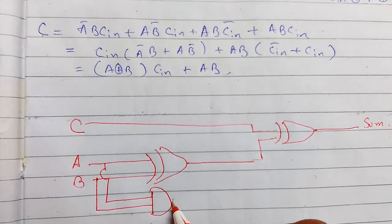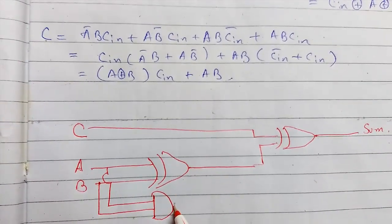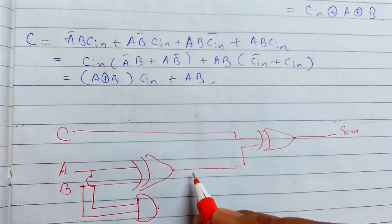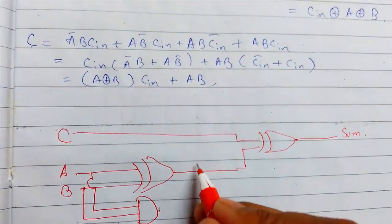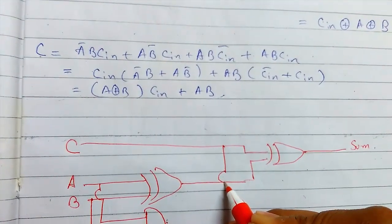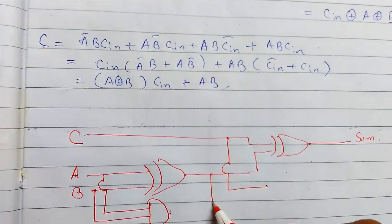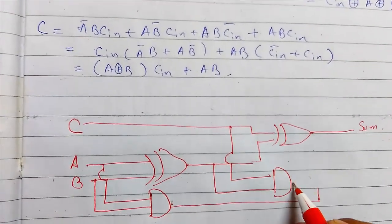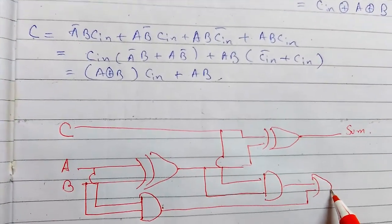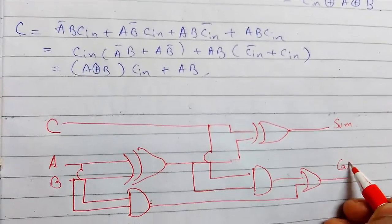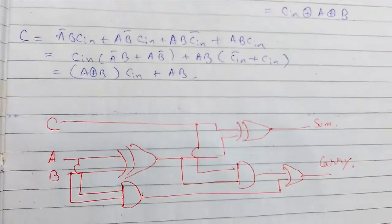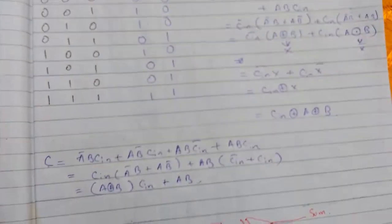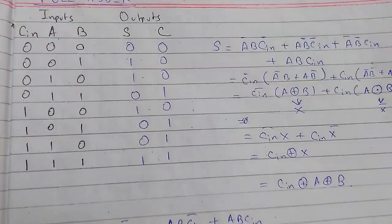I need the AND of this, so C-in is getting ANDed with this, and the resultant of this and A B is getting ORed. This will give us the carry out value. This is the circuit for full adder. Thanks for watching.